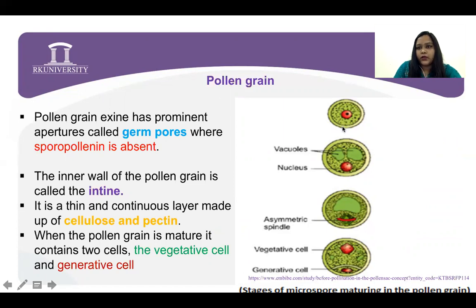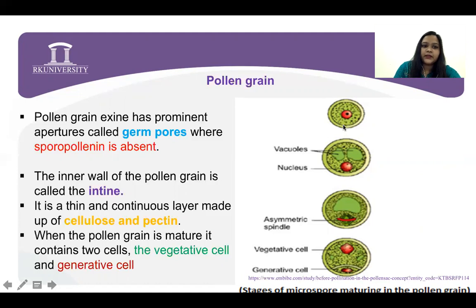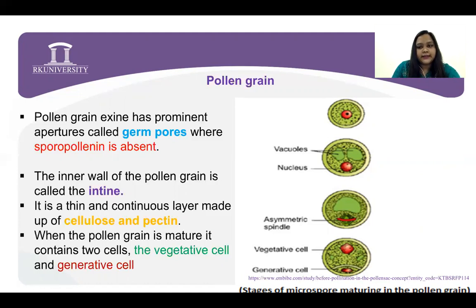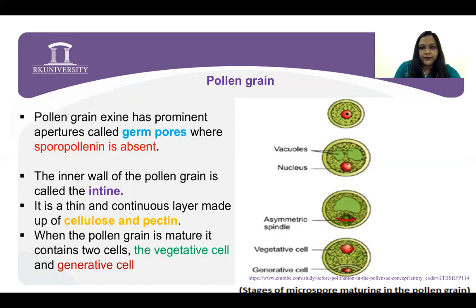The pollen grain exine has a prominent aperture. In that, there is one pore called a germ pore where sporopollenin is absent. The inner layer of the pollen grain is called the intine. The outer is called exine and the inner one is called intine — it is a thin and continuous layer made up of cellulose and pectin.